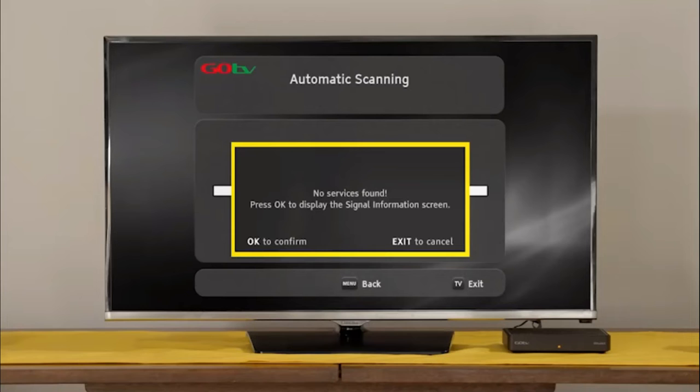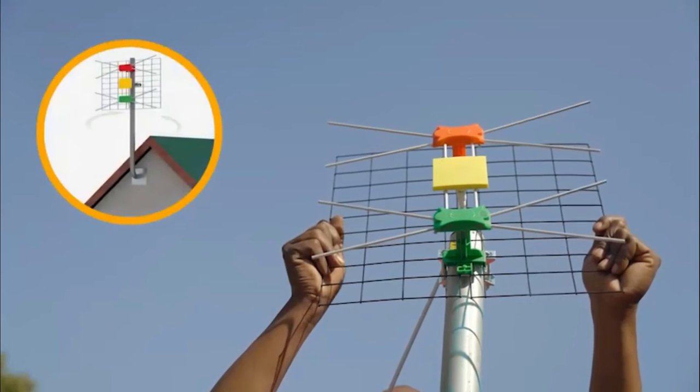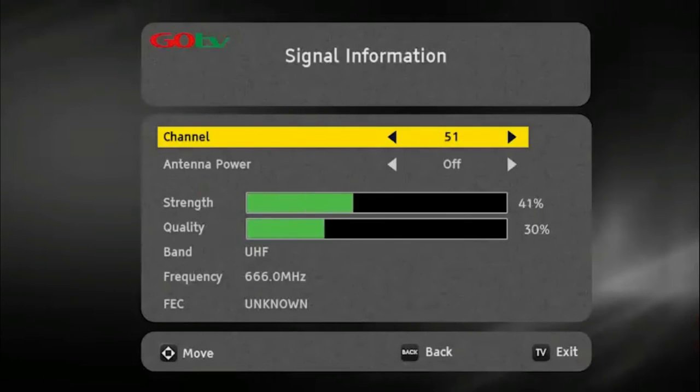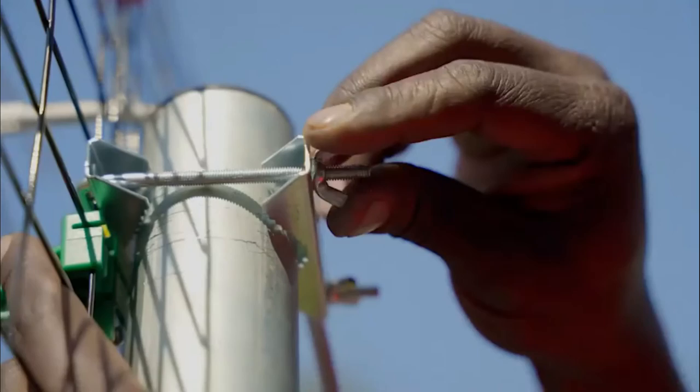If no signal is found, it will automatically take you to the signal detection screen. Insert the channel number for your region. This can be obtained from the GoTV website. At this point, you may need to rotate the antenna to maximize signal strength and quality. Use the on-screen bar to help fine-tune.